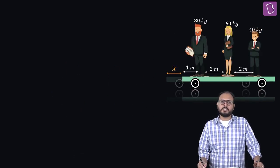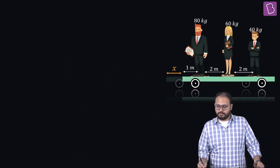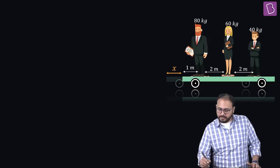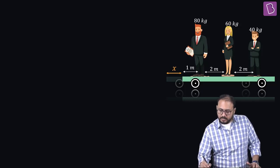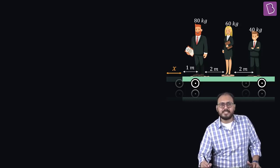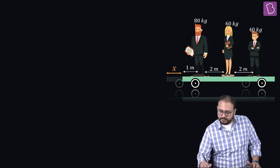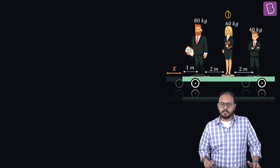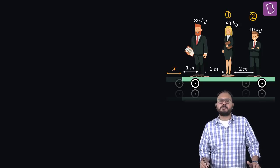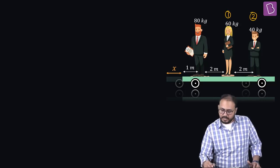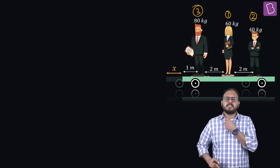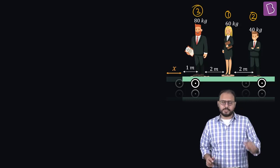How much did the platform move? I will give you the initial positions. This lady in the middle was initially at position one. This person on the right hand side initially was at position two, and this is person three.